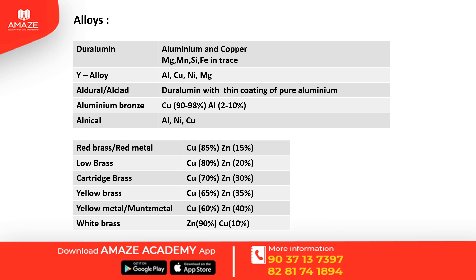Aluminium bronze is an alloy of copper and aluminum. Al-nickel is an alloy of aluminum, nickel, and copper. Brass alloys of copper and zinc include: red brass, red metal, low brass, cartridge brass, yellow brass, yellow metal or Muntz metal, and white brass.